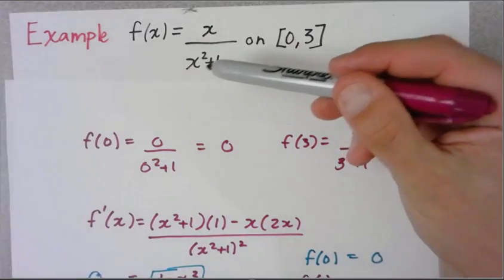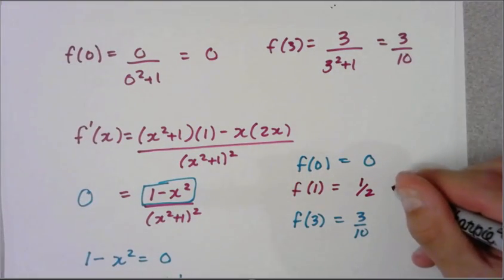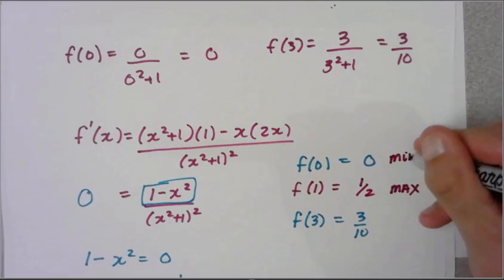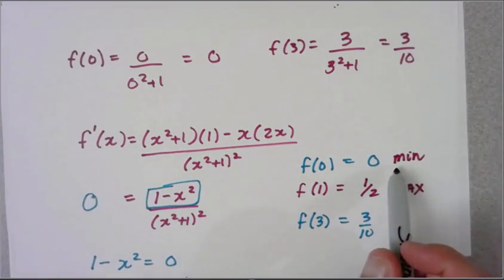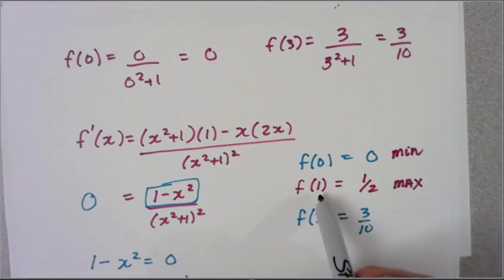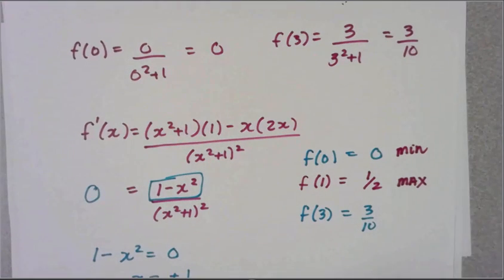Here's our absolute max, and here's our absolute minimum. When x = 0, the absolute min is 0. The maximum happens at 1, and it's 1/2. If you have any questions or comments about how to find the absolute max or min using the closed interval method, you can type them below, and we'll see you next time.